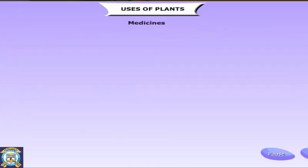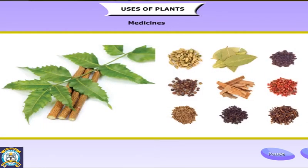The leaves of the basil plant that most people grow in their homes are good for cough and cold. The extract from the leaves and seeds of the neem tree is good for skin diseases. Turmeric can act as an antiseptic. Ginger juice is good for the throat and for digestion. The medicine for treating malaria is made from the bark of the cinchona tree. Eucalyptus oil is used in balms for headache and for treating cold and cough. Sandalwood paste and oil are considered good for the skin. Garlic helps in digestion.